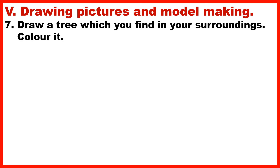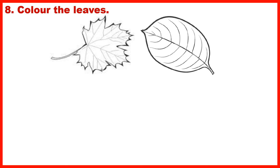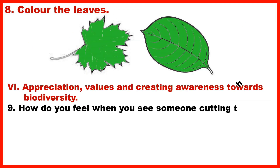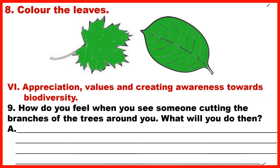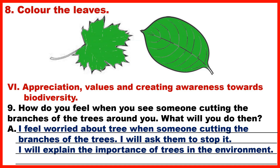Section 5: Drawing pictures and model making. Question 7: Draw a tree which you find in your surroundings and colour it. Question 8: Colour the leaves. Section 6: Appreciation, values and creating awareness towards biodiversity. Question 9: How do you feel when you see someone cutting the branches of trees around you? What will you do? Answer: I feel worried. I will ask them to stop and explain the importance of trees in the environment.